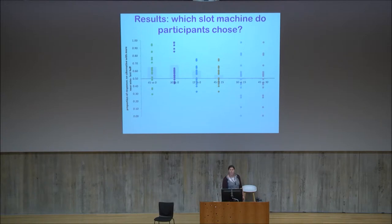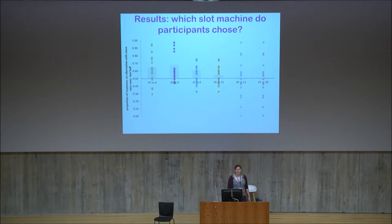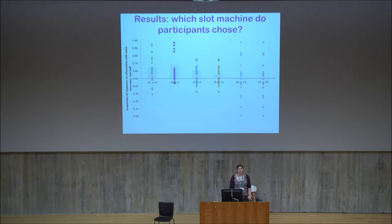Most of the dots are above that line for those three conditions, showing that people allocated more of their responses to the slot machine that had the near wins. For the conditions where near-win rates were closer together, it's a little messier. That's a nice first example showing you can get sensible data out of these simulations, and that people really do prefer the slot machines that have near wins.